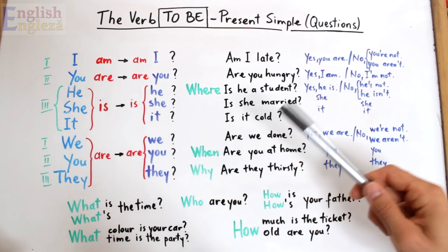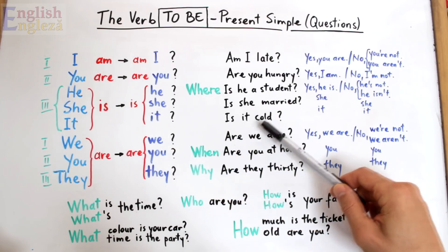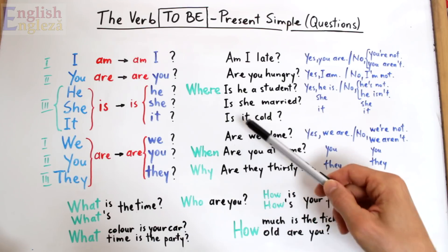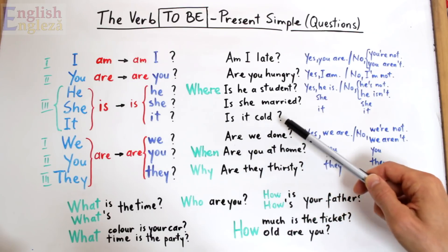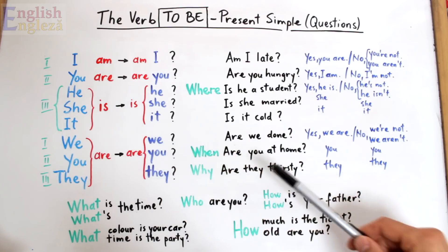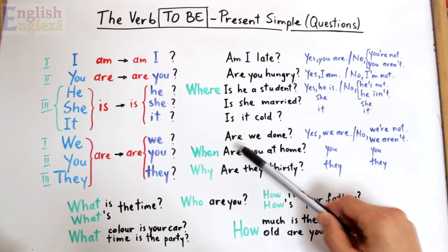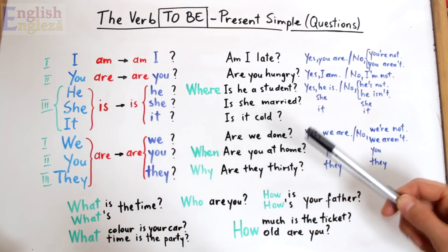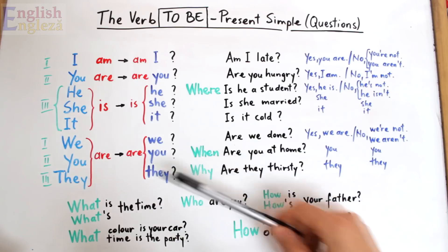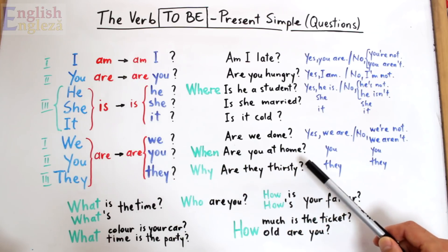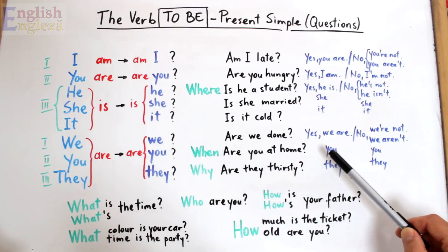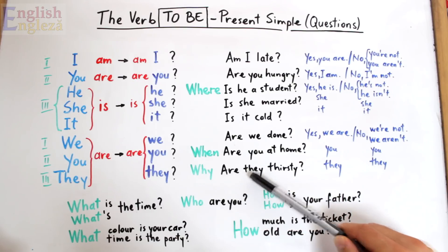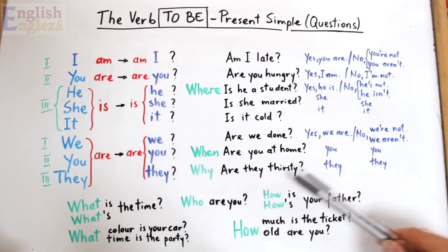Apoi, pentru it, pronumele neutru impersonal: Is it cold? — Este frig, it ținând locul vremii, cu sensul este vremea rece. Apoi, pentru we, noi: Are we done? — Suntem noi terminat, cu sensul am terminat treaba. Apoi, pentru you, voi: Are you at home? — Sunteți voi acasă. Și pentru they, ei sau ele: Are they thirsty? — Sunt ei însetați, cu sensul le e sete.